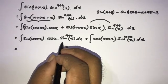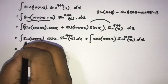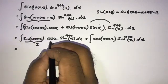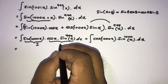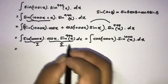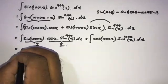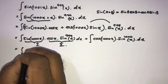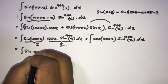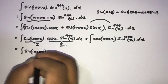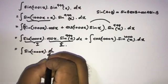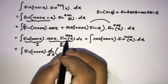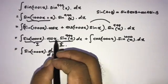Now we are going to integrate the first part. We can apply the integration by parts method. I am going to take sine of 1000x as part one and the remaining expression as part two. We write the first function sine of 1000x, then d/dx, and then the integral of the second part.